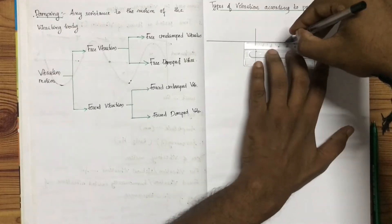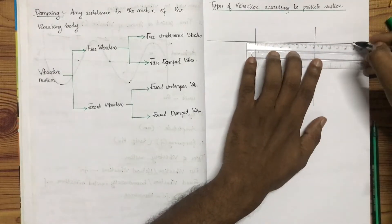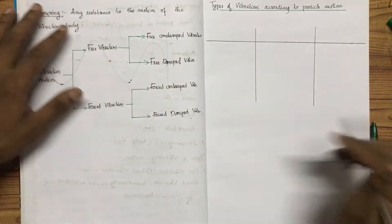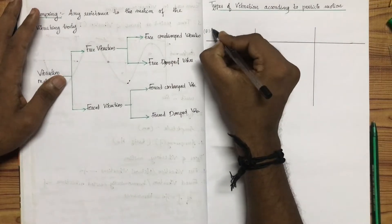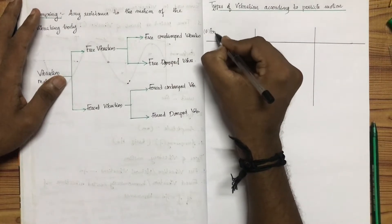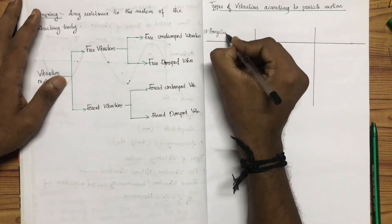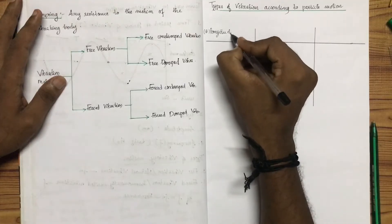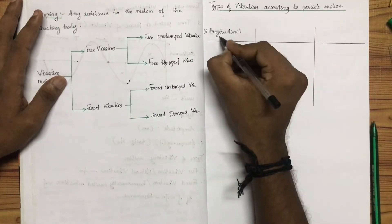The three modes of vibration based on particle motion are: 1. Longitudinal Vibration, 2. Transverse Vibration, and 3. Torsional Vibration. We will start with the first one, Longitudinal Vibration.